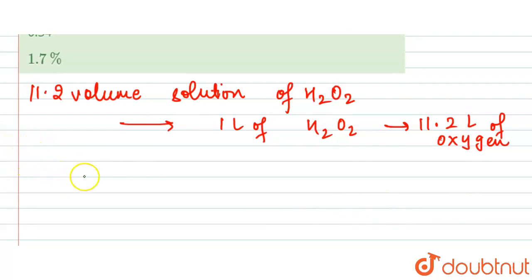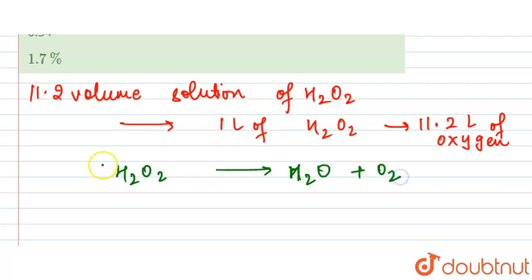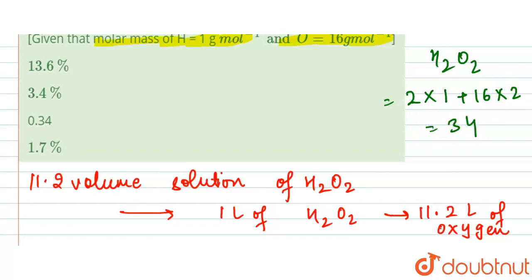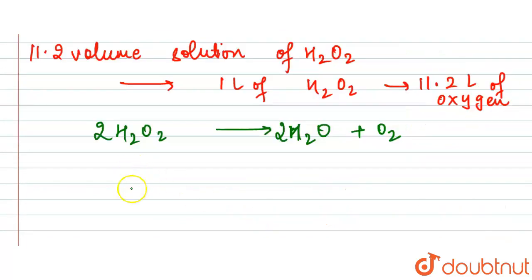The decomposition reaction is: 2 H₂O₂ → 2 H₂O + O₂. The molecular weight of H₂O₂ is (2×1) + (2×16) = 34, so two moles of H₂O₂ have a mass of 68 grams.